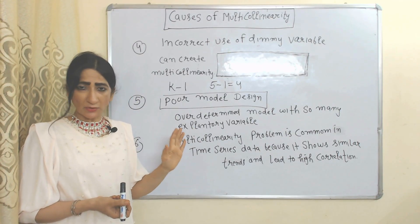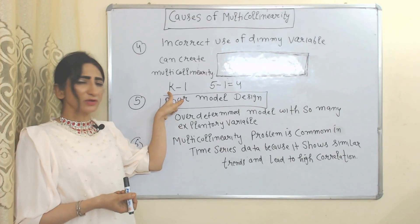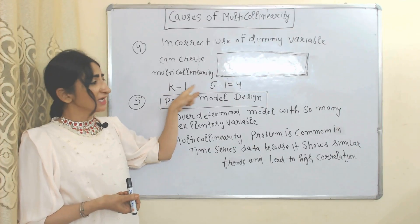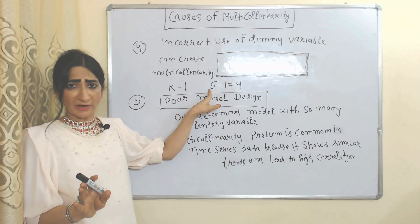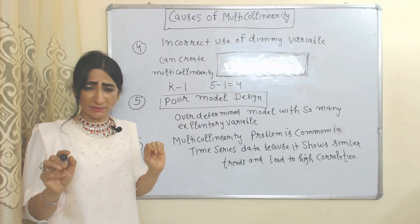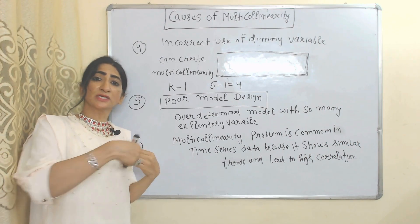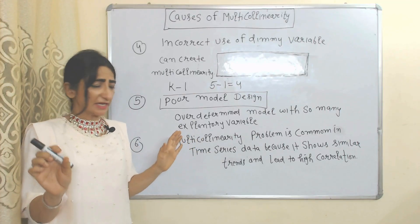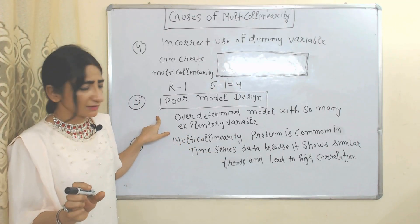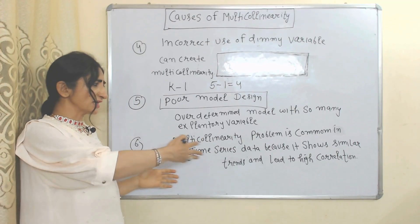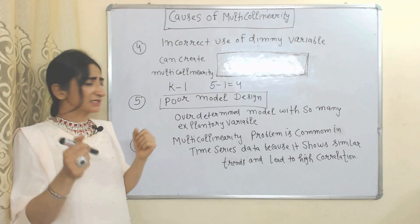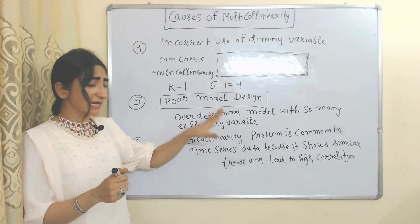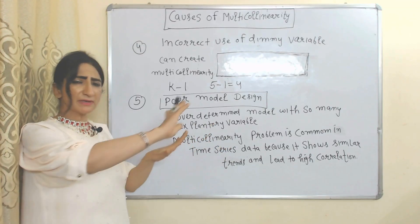Incorrect use of dummy variables can create multicollinearity. The formula for keeping dummy variables is K minus 1, where K is the number of categories. If there are 5 categories, we should keep 4 dummy variables, but sometimes all categories are included, leading to multicollinearity. Poor model design — an over-determined model with too many explanatory variables can lead to multicollinearity. Multicollinearity is also common in time series data because it shows similar trends, leading to high correlation among independent variables.